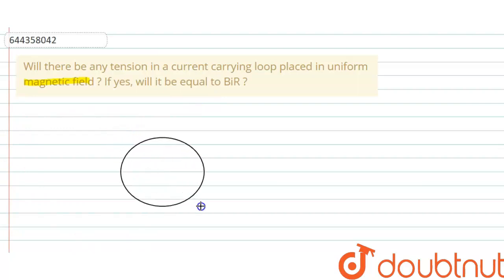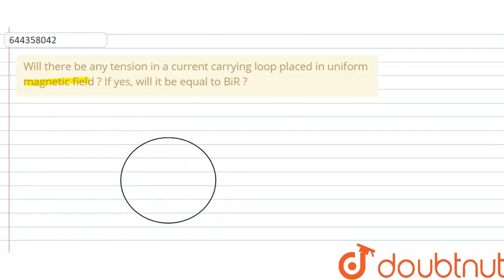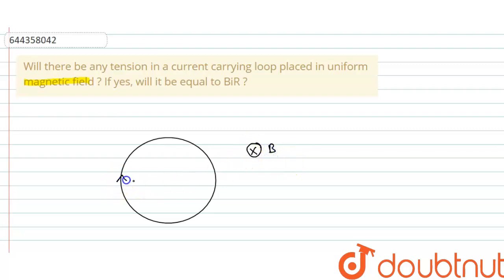Here is the situation: a circular current-carrying loop of radius R is placed in a uniform magnetic field. Let's say the magnetic field is in the inward direction, the current is in the clockwise direction, and the radius is R.